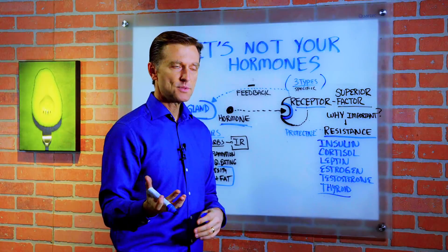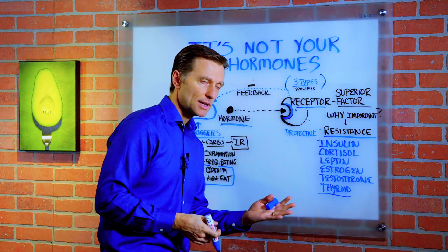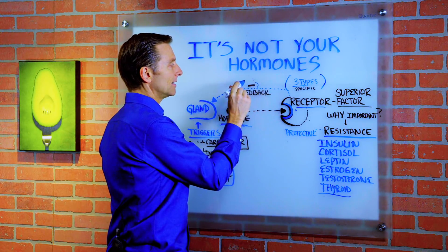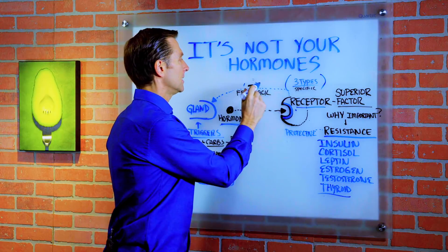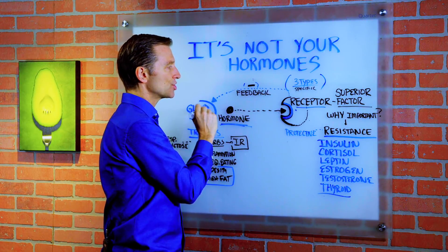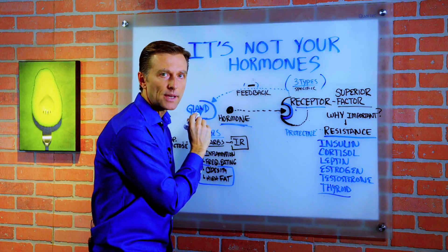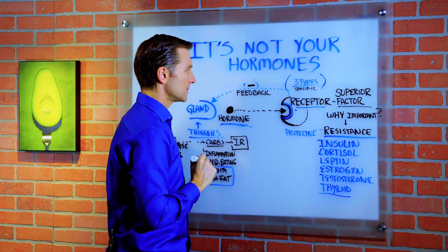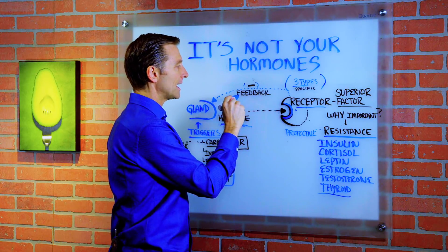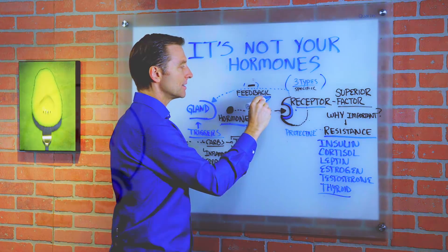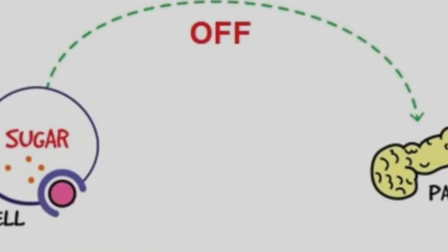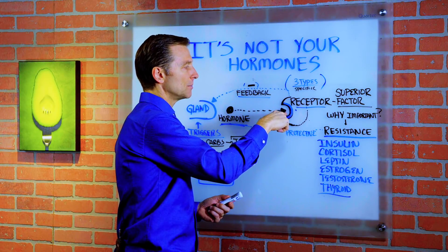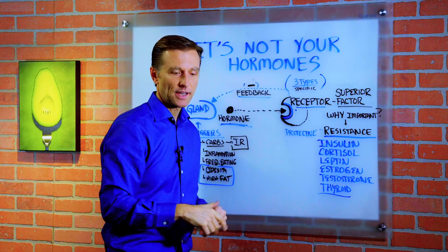There are negative feedback loops and positive feedback loops. I'm just going to talk about the negative ones, which basically tell the gland to turn off — to lower that hormone. The negative feedback is simply a signal back to turn off the gland because the function has been complied with.